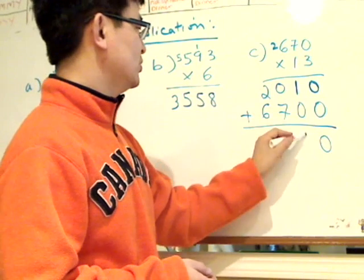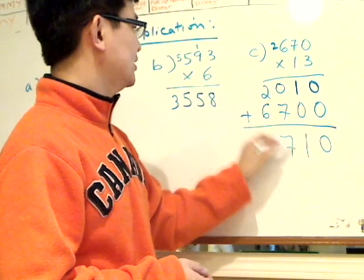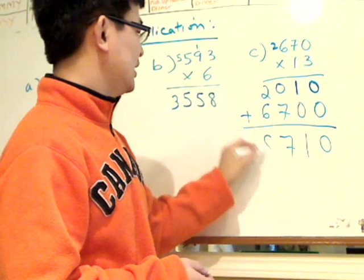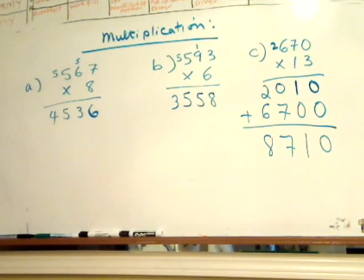Zero plus zero is zero, one plus zero is one, zero plus seven is seven, two plus six is eight. So, 8710.